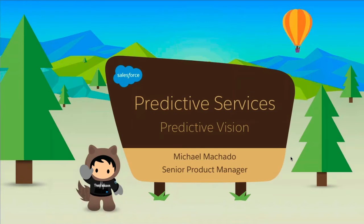I'd like to introduce Michael Machado, who's going to kick us off. Michael, are you ready to go? Yes, I am. Thank you all for attending this webinar. I'm Michael Machado, Senior Product Manager with Einstein, formerly with the MetaMind team, which was an acquisition that came in the spring of last year. I'm going to be outlining some of the recent advances we've done in deep learning, how we're exposing those to developers, and introduce a great way to get started with our first product: the Predictive Vision Service.